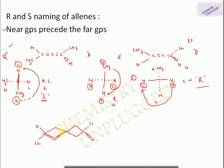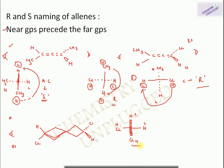For naming a spirane using the same RS method: looking from one side, the near-carbon hydrogen and chlorine in the vertical plane are shown as bold bonds, and the far-carbon hydrogen and chlorine in the horizontal plane are shown as dashed bonds. After assigning CIP priorities and moving from higher to lower priority of the near carbon from the side of the lower priority group of the far carbon, the motion is anti-clockwise — giving S configuration.